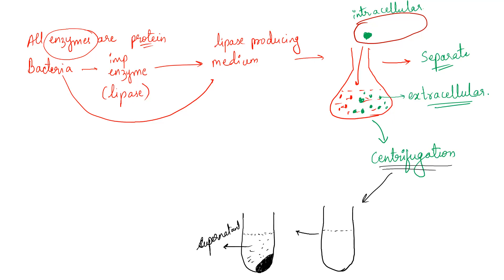When you centrifuge, there are two parts: supernatant and pellet. If the protein is extracellular — the cell has given out the protein — it will be in the supernatant. If intracellular, it will be in the pellet. The cells are denser and settle down during centrifugation.